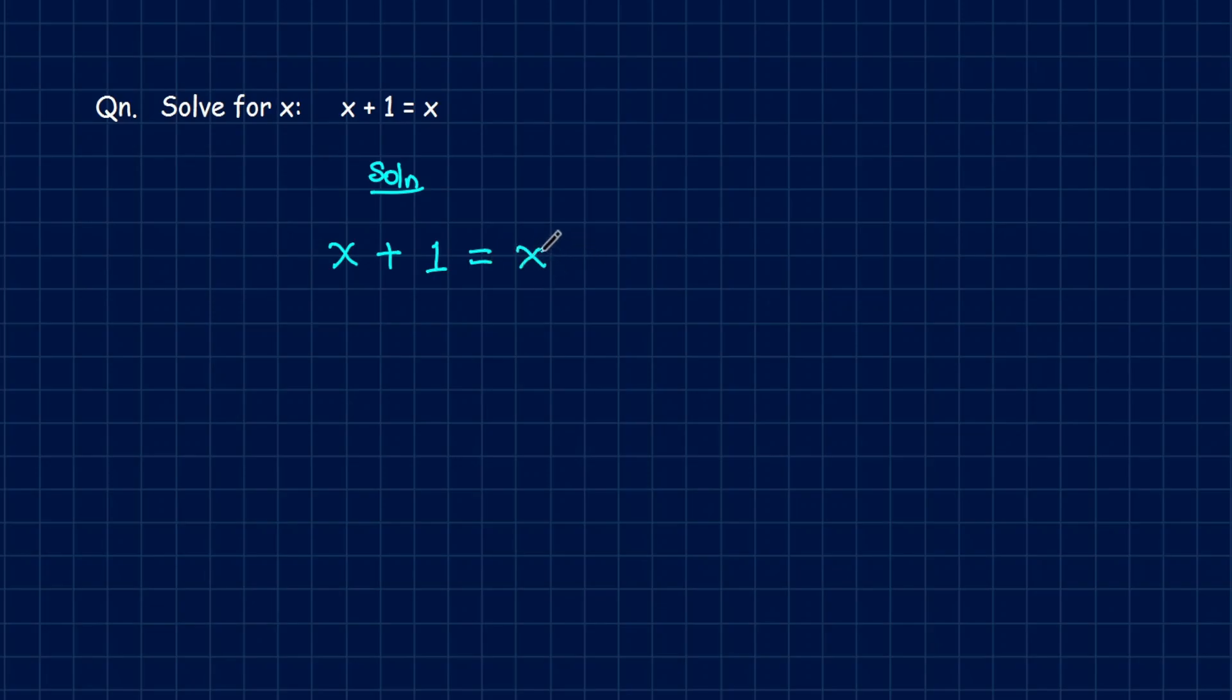So what happens is if we take this x to the left hand side, we'll have x minus x. Like if I do it here, I have x minus x plus 1 equals 0. This automatically goes to 0, and we have here 1 is not equivalent to 0. It cannot work.